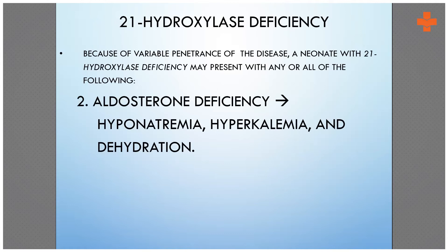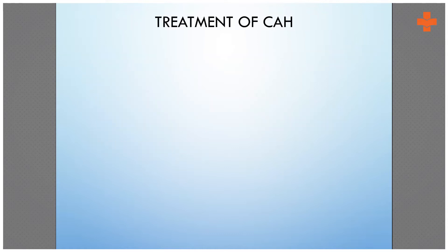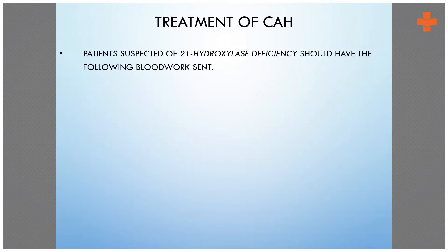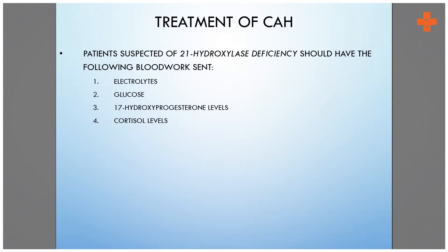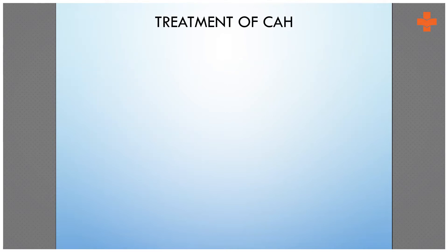If we have aldosterone deficiency, we can find hyponatremia, hyperkalemia, and dehydration — so these things we have to look into. For treatment: electrolytes, glucose management, and we get hydroxyprogesterone levels, cortisol levels, aldosterone, and renin levels.